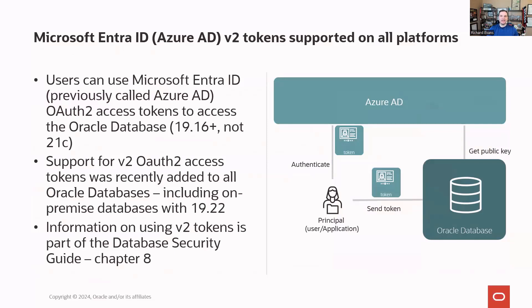Alan Williams and the Identity and Access Management team have been working hard with Microsoft. We now support Microsoft Entra ID — otherwise known as Azure Active Directory — version 2 tokens with all Oracle databases 19.16 and above, but not 21c. If you want to use Azure Active Directory v2 OAuth 2 access tokens, it's available including on-prem with the 19.22 release update — a great reason to stay on top of patching. Check out chapter 8 of the Oracle Database Security Guide for more information.